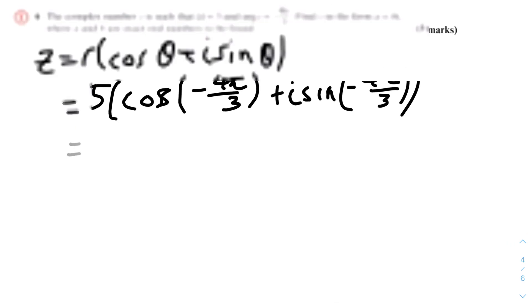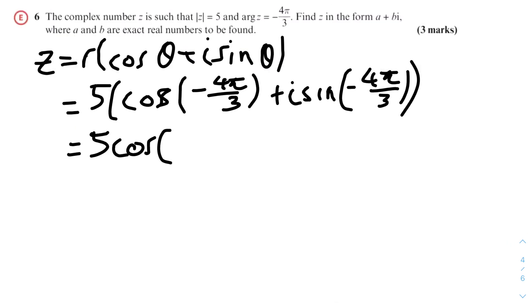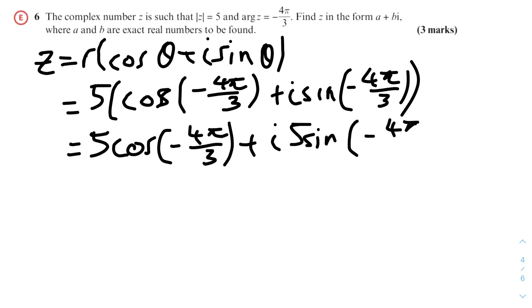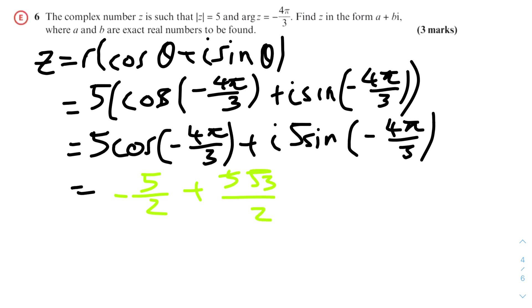Expanding the bracket: z = 5 cos(−4π/3) + 5i sin(−4π/3). Evaluating: the real part, 5 cos(−4π/3) = −5/2. The imaginary part, 5 sin(−4π/3) = 5√3/2. Therefore z = −5/2 + (5√3/2)i. This can also be written as 5i√3/2, but the most common form keeps i separate.